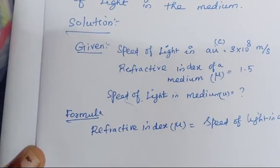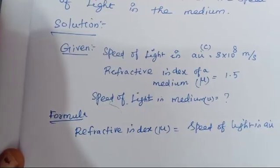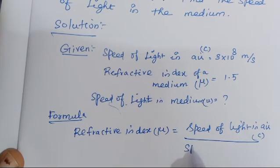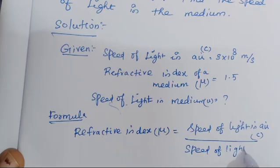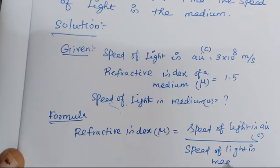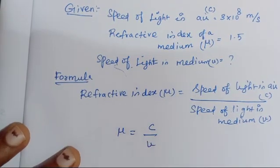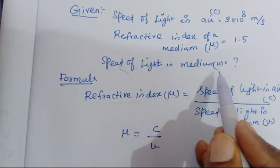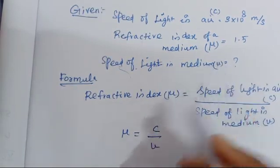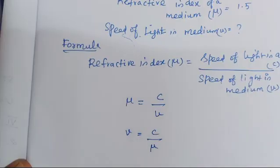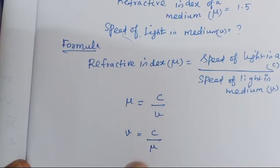C is divided by the speed of light in medium, denoted by V. So simply: mu = C / V. But we have to calculate only the speed of light in medium, so we rearrange: V is equal to C divided by mu.